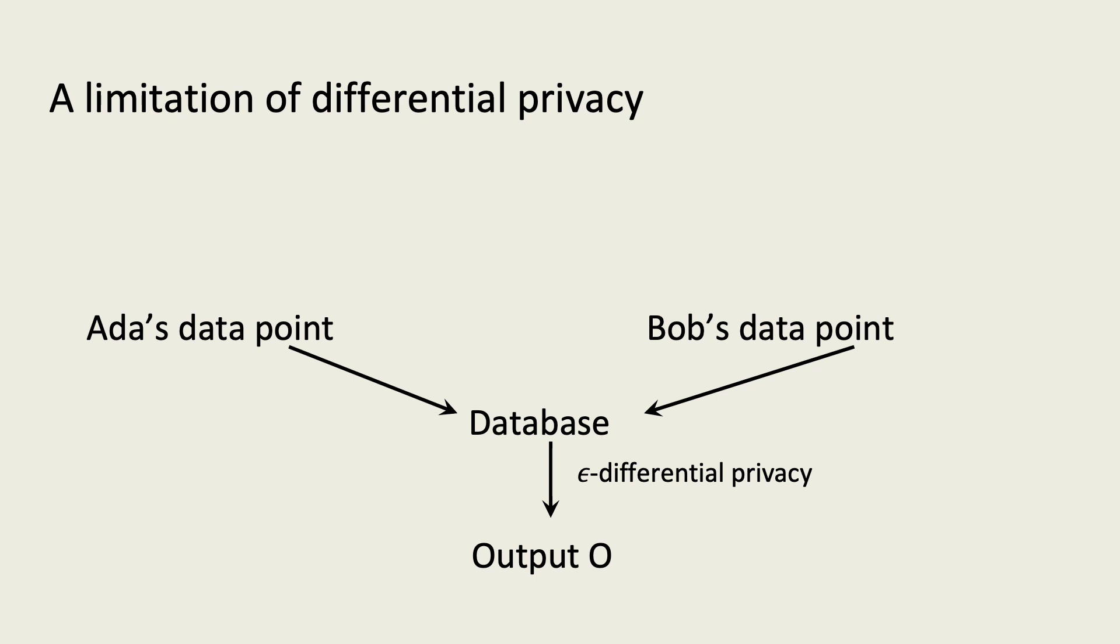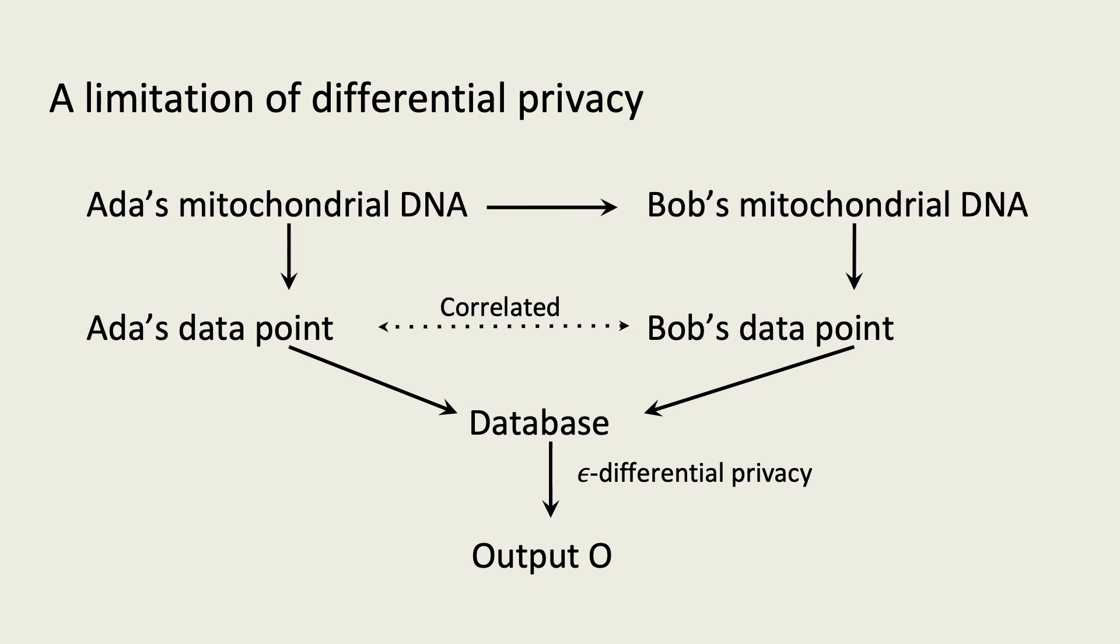Recall that we have Ada and Bob providing genetic information to a differentially private survey. Now, let us add that Ada is Bob's mother and the mutation we're interested in is to mitochondrial DNA, which is only inherited from one's mother. This introduces a correlation between Ada's and Bob's data points. This correlation means that Ada's data point provides information about Bob's and Bob's data point provides information about Ada's. In this case, the association between one of these data points and the output will be stronger than one might expect from differential privacy, since both data points will be providing information about the other.